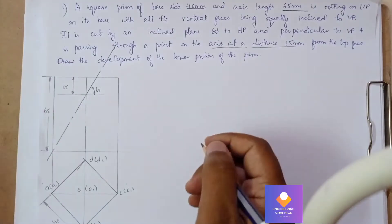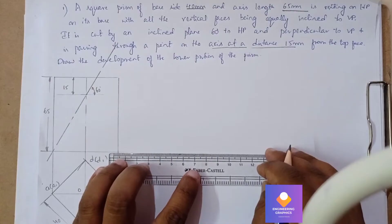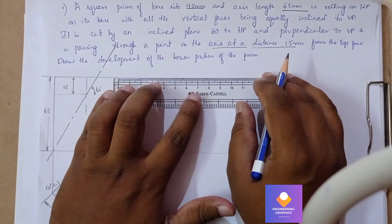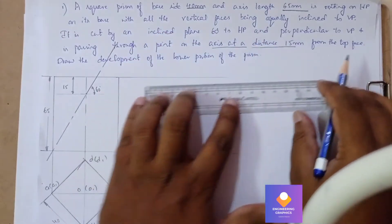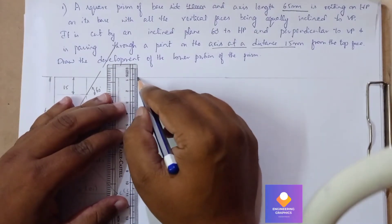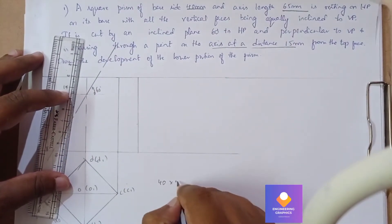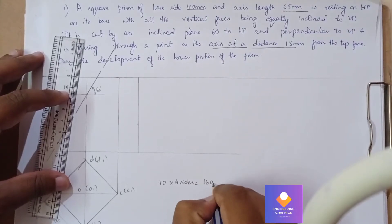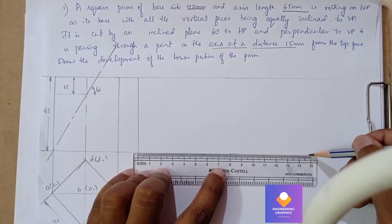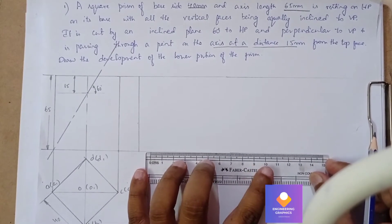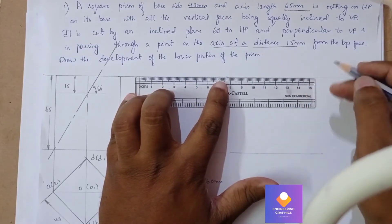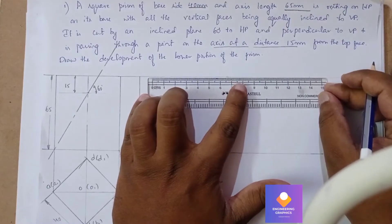The cut plane is inclined at 60 degrees and cuts exactly at a height of 15mm from the top face. Now we will extend to show the development using the parallel line method. Take one reference line — the base edge is 40mm and there are four sides, so the total length is exactly 160mm. We extend to 160mm: 150mm plus another 10mm. At exact points we mark 15mm on the top side.